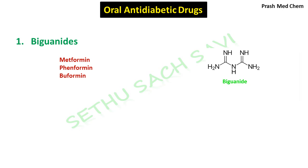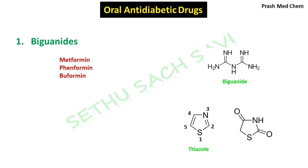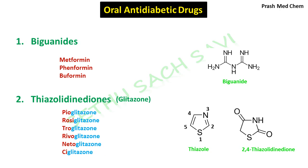The second class in this category is based on the heterocyclic ring thiazole, which has two heteroatoms — sulfur and nitrogen — at alternating positions. Numbering starts from the sulfur atom: 1, 2, 3, 4, 5. Attaching a double-bond oxygen at positions 2 and 4 gives 2,4-thiazolidinedione. Derivatives — commonly called glitazones — have anti-diabetic action and their names end with 'glitazone.' Examples are pioglitazone, rosiglitazone, troglitazone, rivoglitazone, netoglitazone, and ciglitazone.